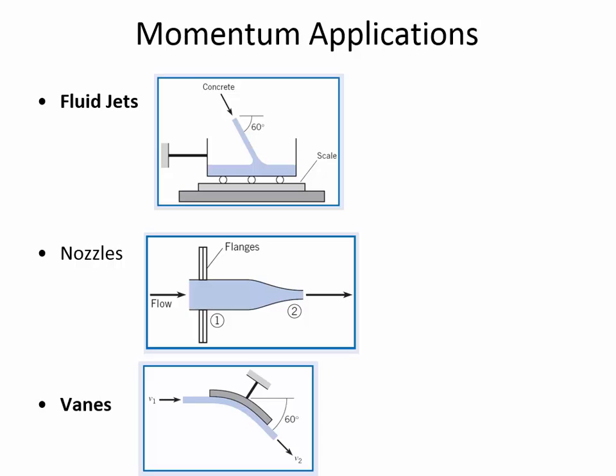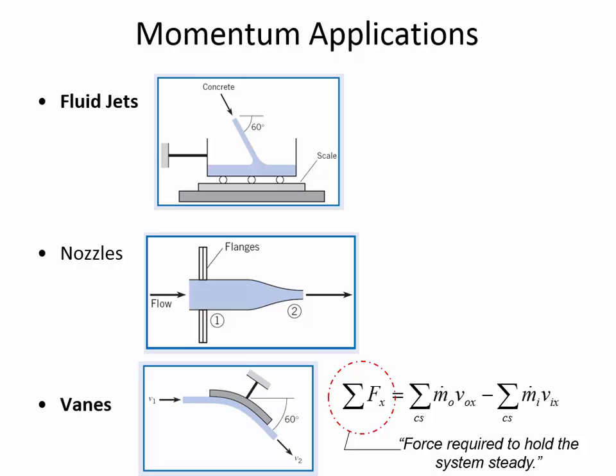Finally, there are nozzles. We'll talk about nozzles on Thursday — there are no nozzle examples in today's class or the first homework, but it's the third of the three main types. What makes nozzles unique is that we have to account for pressure, because on the upstream end of the nozzle it's a pressurized pipe, and that adds a complication to how we account for the forces required to hold the system steady. In all of these cases, the main equation we apply works in the x and y directions, and always remember: the left-hand side is interpreted as the force required to hold the system steady.